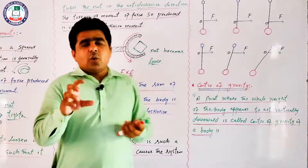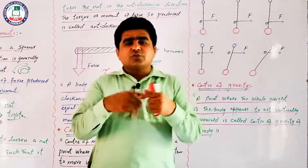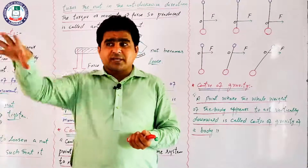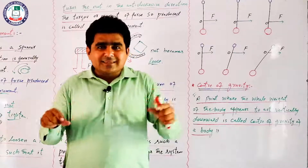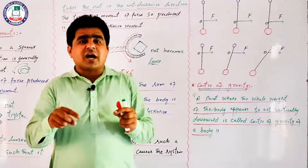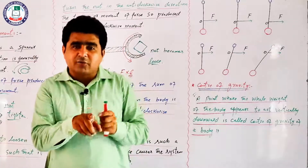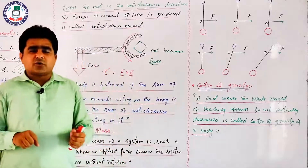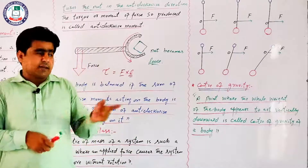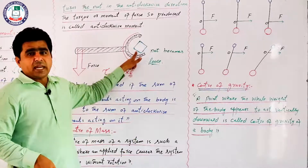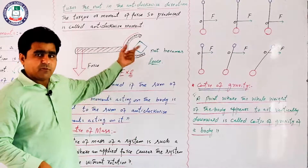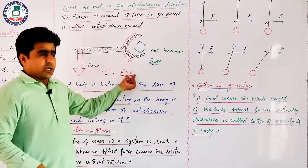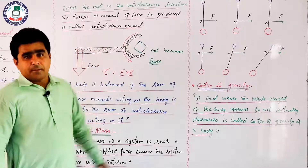Nut छोटे spinner से loose नहीं हो रहा था। बड़ा spinner लेकर आते हैं जिसकी length ज़्यादा होती है। उसमें moment of force produce करने की ability ज़्यादा होती है छोटे spinner की निस्बत। थोड़ी सी force लगाने से भी वो nut loose हो जाएगा जो पहले नहीं हो रहा था। Longer spinner → ज़्यादा moment of force।